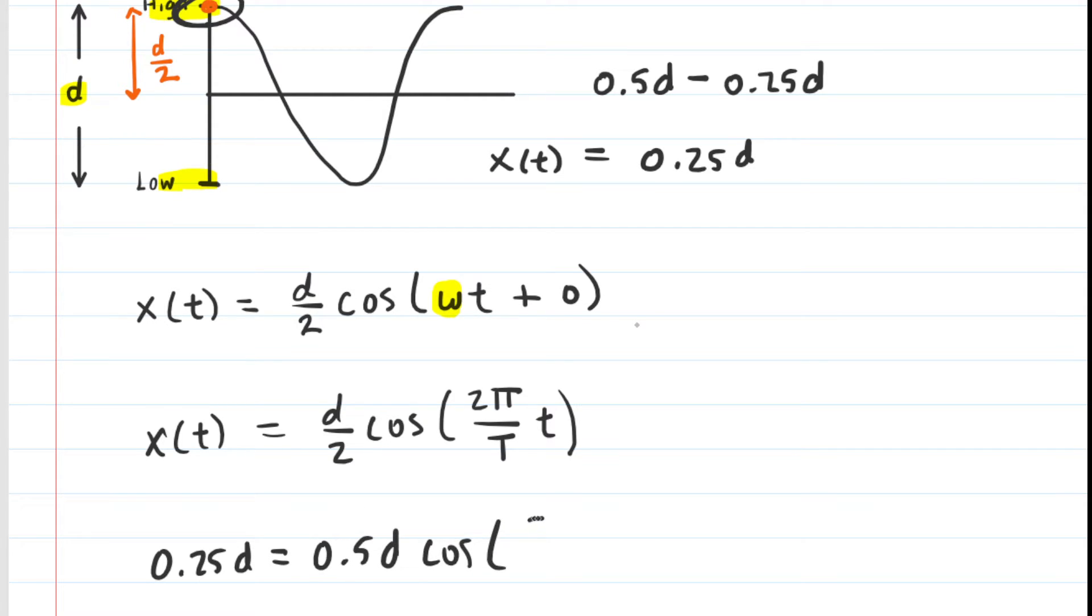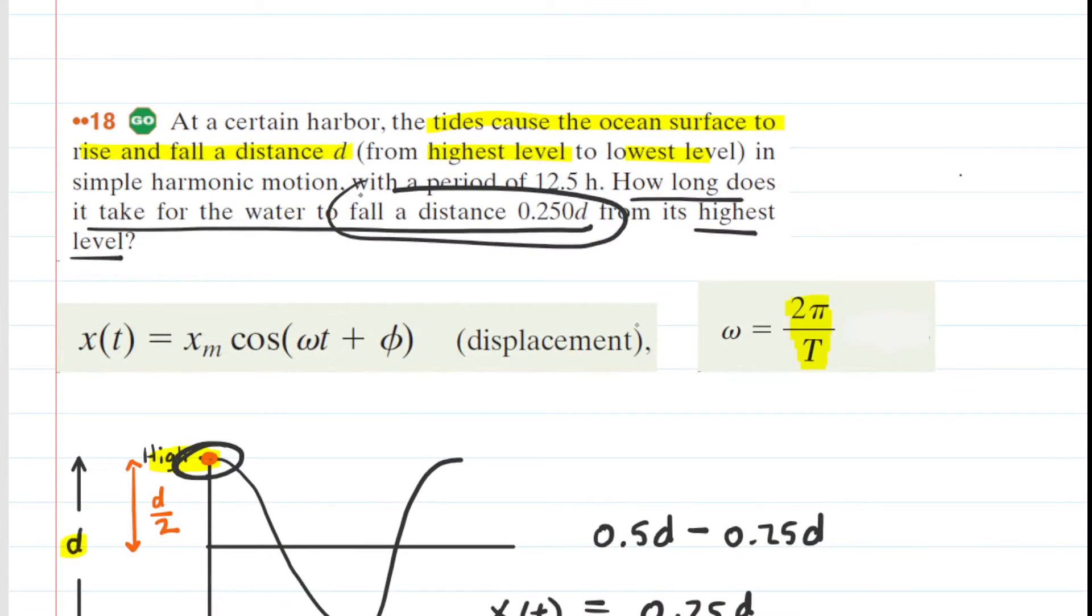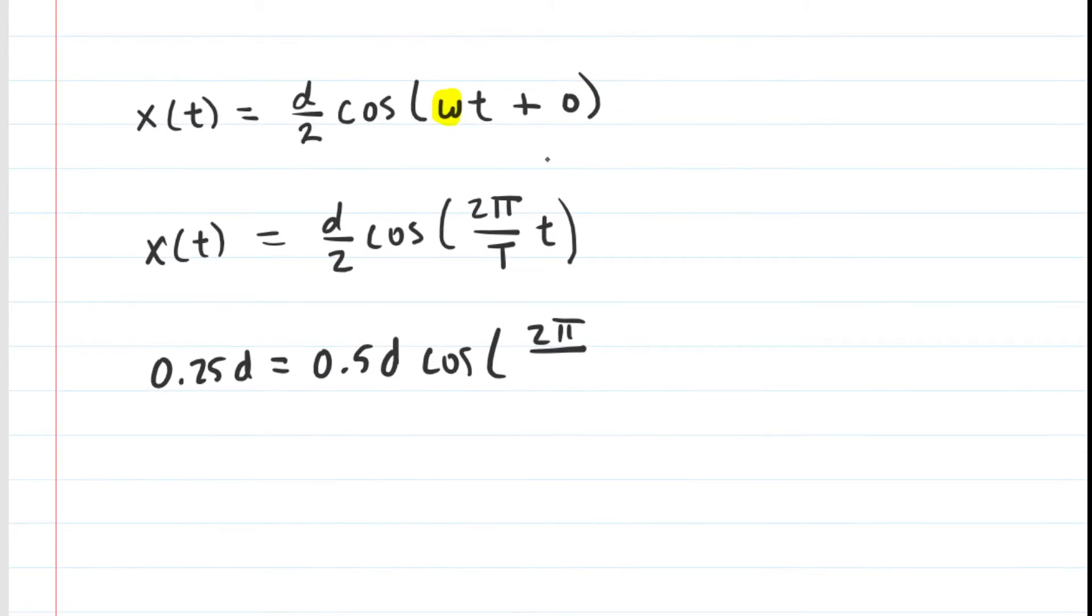Now, in addition, the period, which is capital T, was stated in the problem to be 12 and a half hours. It's right there. So we're going to sub in 12 and a half for the period represented by capital T. And now the question becomes, how do we solve for lowercase t? That's what we're actually looking for, is the time required for this motion to take place.